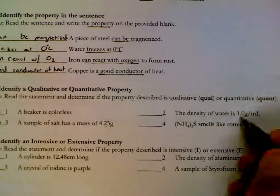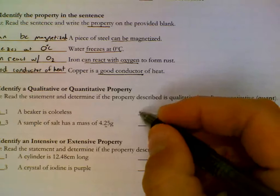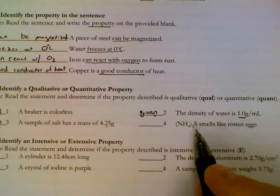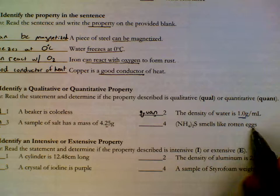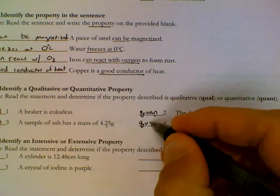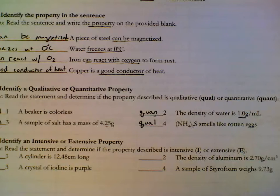Density of water is 1 gram per ml. That's a number. Quantitative. NH4 sub 2 S smells like rotten eggs. Ammonium sulfide uses words. It makes this qualitative.